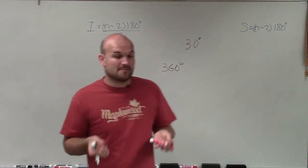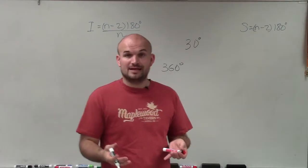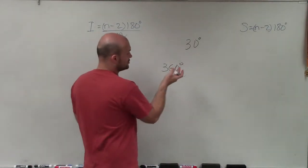So if one of the angles, remember, exterior of a regular polygon, they're all going to be equal to each other. So if one of the angles is 30 degrees,